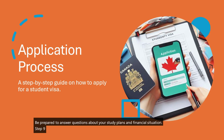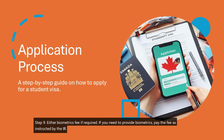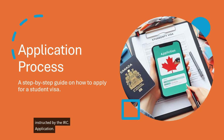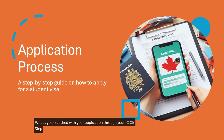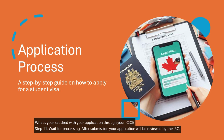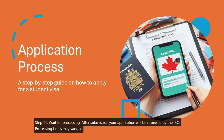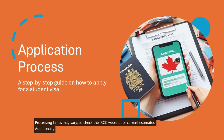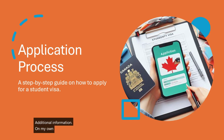Step 9 — Pay the Biometrics Fee (if required): if you need to provide biometrics, pay the fee as instructed by the IRCC. Step 10 — Submit Your Application: review your application carefully to ensure that all required documents and information are complete and accurate. Once you're satisfied, submit your application through your MyCIC account. Step 11 — Wait for Processing: after submission, your application will be reviewed by the IRCC. Processing times may vary, so check the IRCC website for current estimates. Step 12 — Provide Additional Information (if requested): if the IRCC requests additional information or documents, be prepared to provide them promptly.